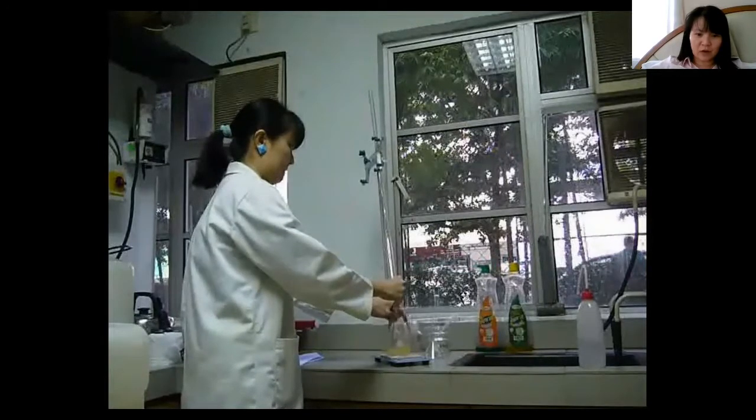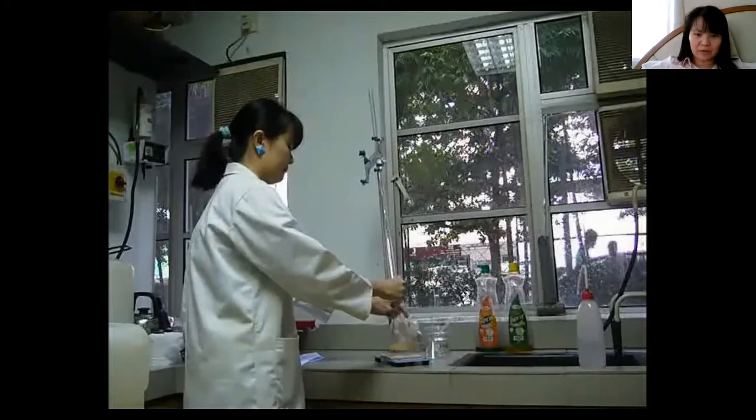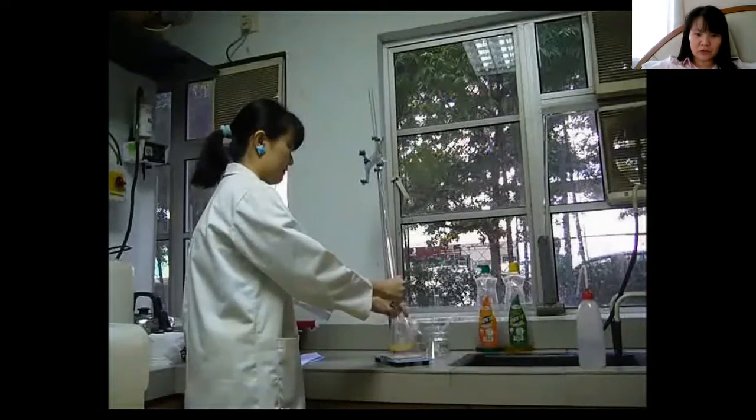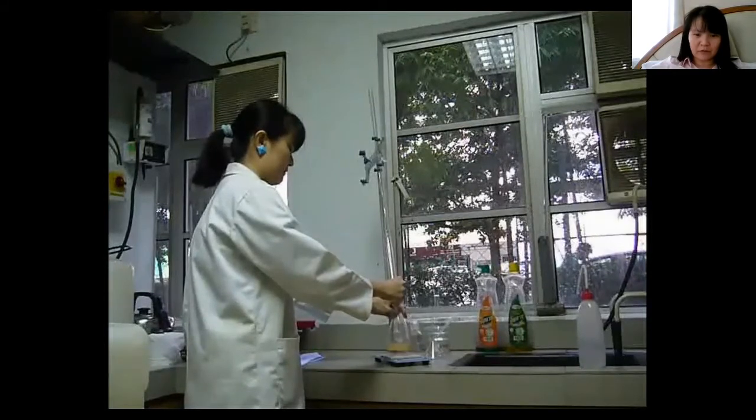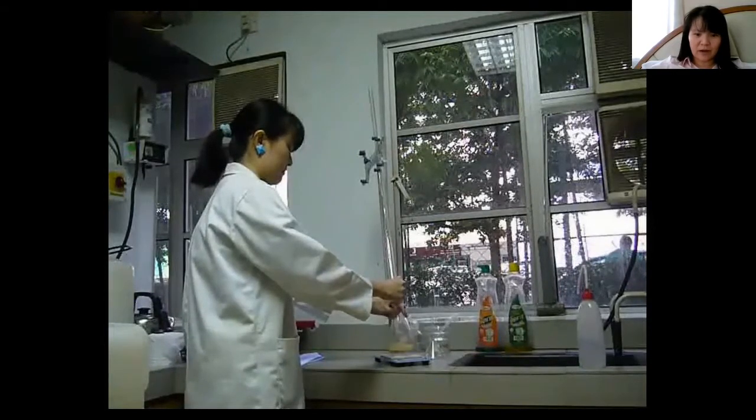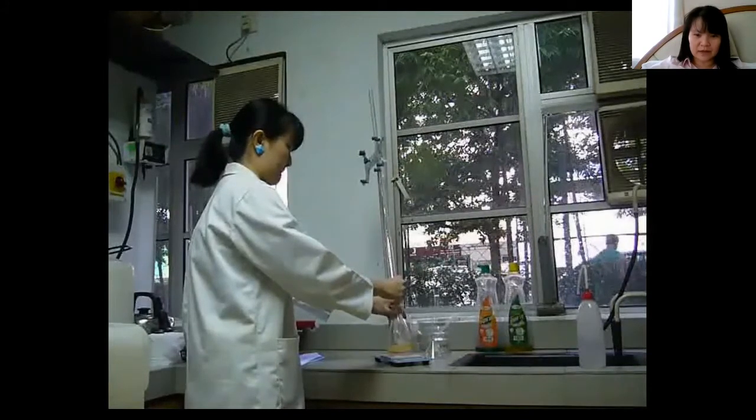At the endpoint, it should be orange color since this is methyl orange. And then we'll read the reading on the burette. If you overshoot, then it will become red. So methyl orange in acid will be red. It looks kind of pink because it's quite dilute.